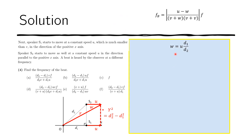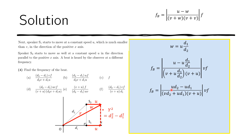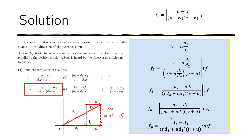Substituting this value of W into the beat frequency formula and multiplying numerator and denominator by D2, then factoring out U, we obtain the beat frequency. Since D2 is greater than D1, we can drop the absolute value, and the result matches one of the answer choices.